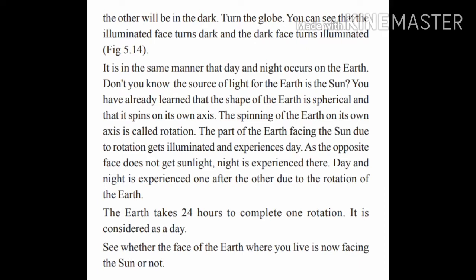The sun is the center of the solar system. Earth is spherical in shape and it spins on its own axis. The spinning of the earth on its own axis is called rotation. When the earth rotates, the part facing towards the sun experiences daytime, and the opposite side experiences nighttime. The earth takes 24 hours, or one day, to complete one rotation.